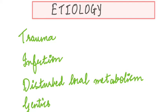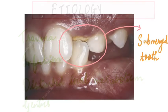Moving on to the etiology: the most common cause is trauma to the developing tooth bud, which may lead to an ankylosed tooth. Apart from this, infection during the developmental stages of the tooth can also result in ankylosis. Disturbed local metabolism can also contribute, and genetics plays an important role as well. Essentially, any disturbance related to the tooth during its formative stages can result in such an anomaly.